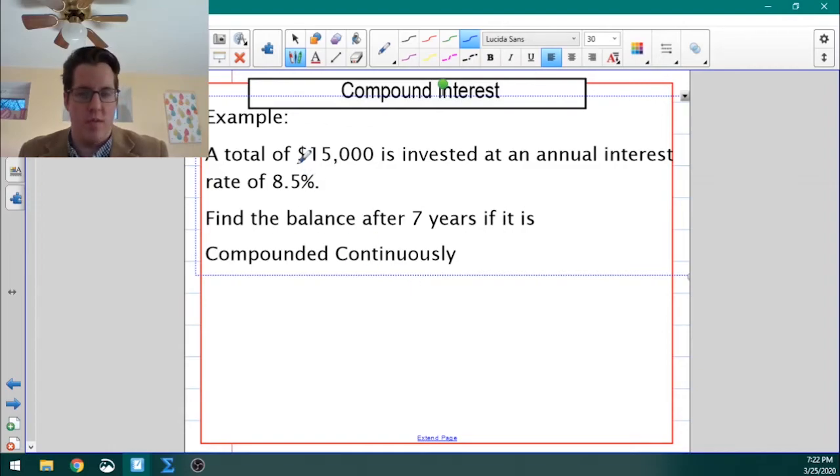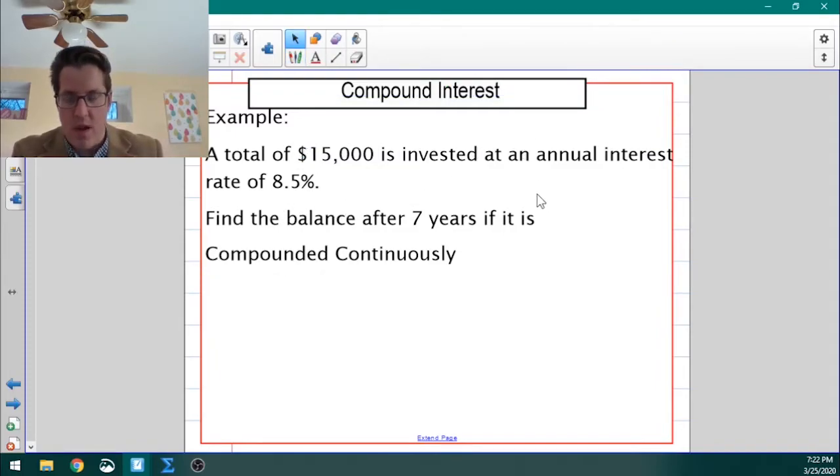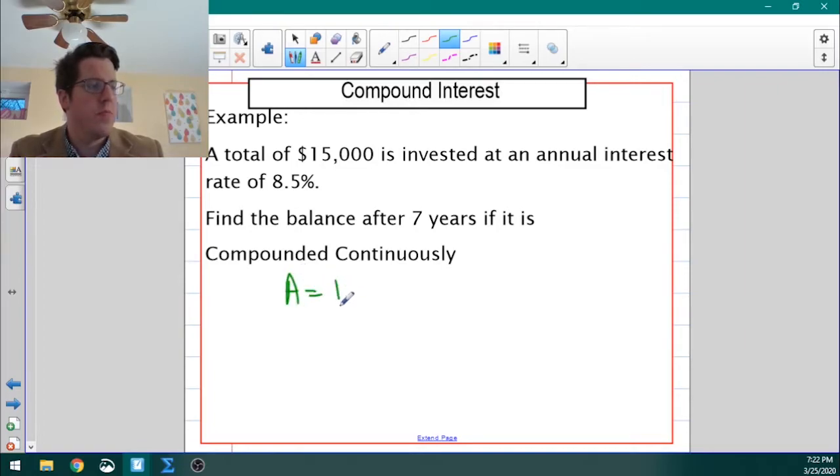Now, compounding continuously. We're going to start by just plugging this into the formula, and then we'll talk about what it means to compound continuously. So the formula for compounding continuously, and this has to do with where E came from, is A equals P times E to the RT. What's not in this formula is N, and the reason that N isn't in the formula is because we don't have a set number of compounds anymore. We're compounding an infinitesimally large number of times.